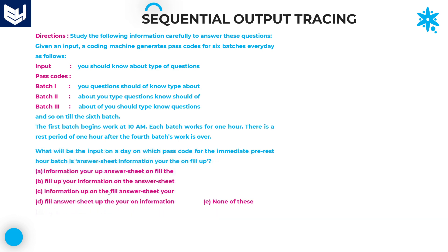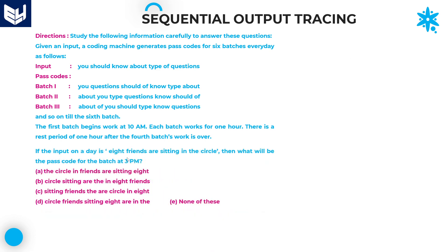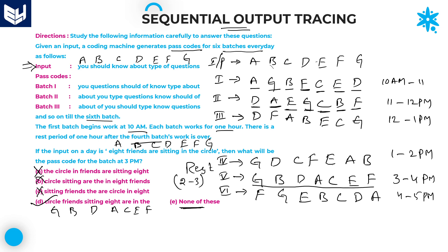Last question in this session: What will be the input? Input is obviously a, b, c, d, e, f, g. The information given is for the pre-rest batch. Pre-rest means the batch before the rest period, which is batch number 4.